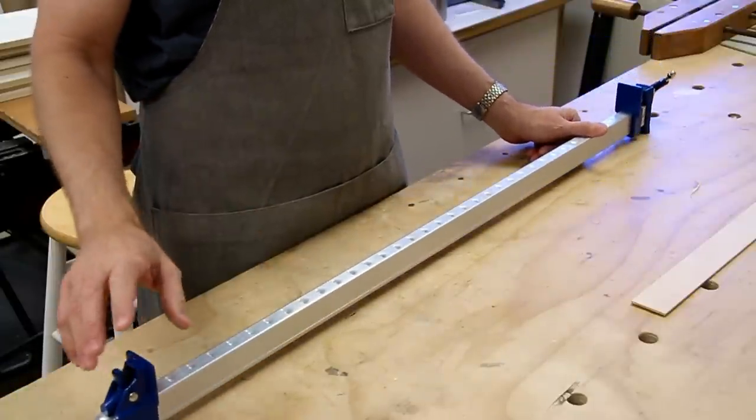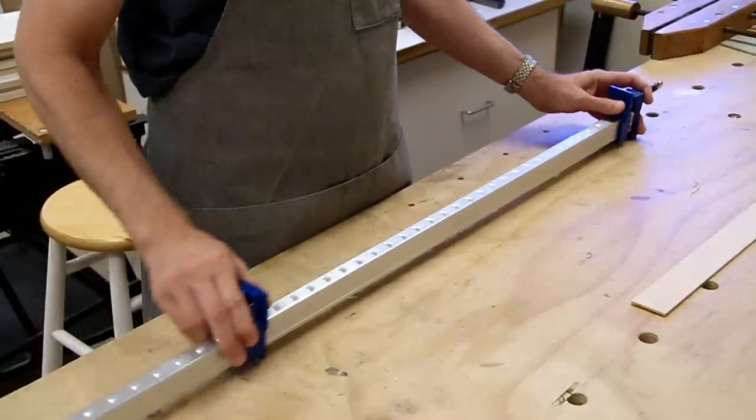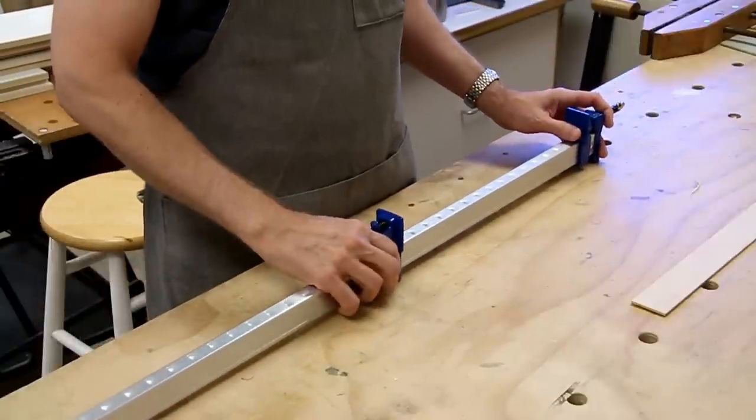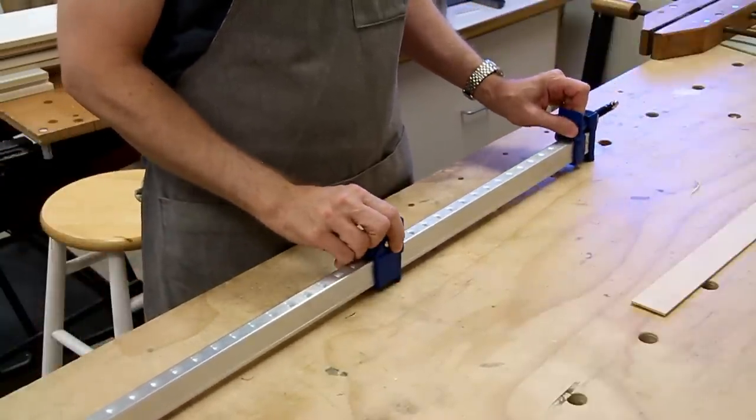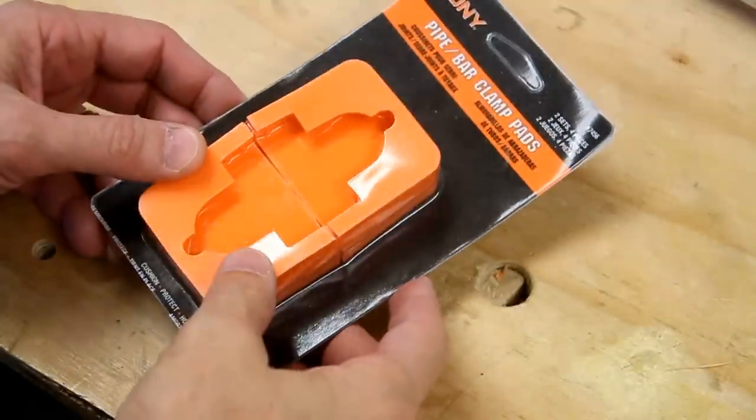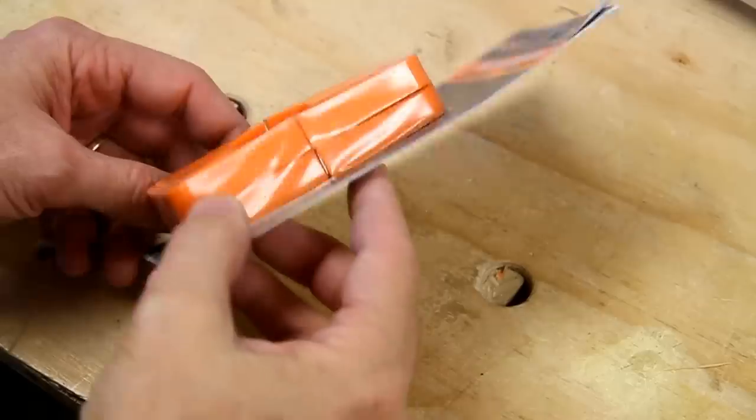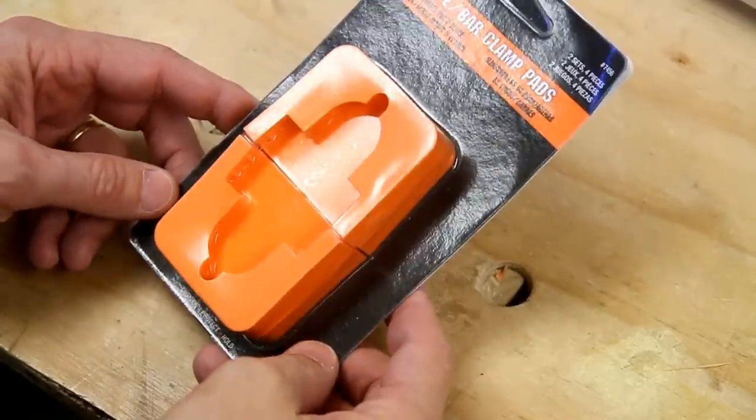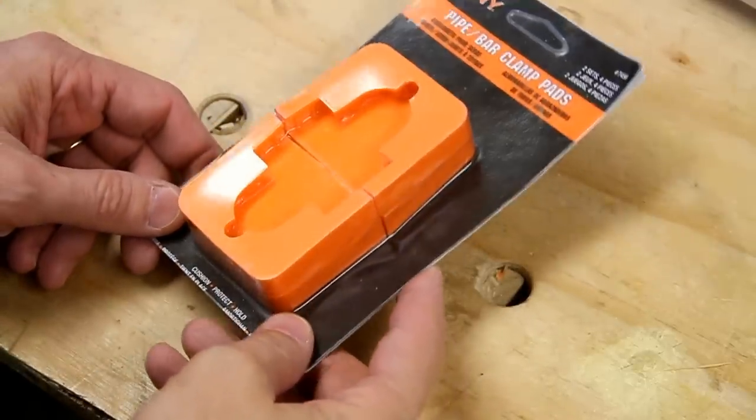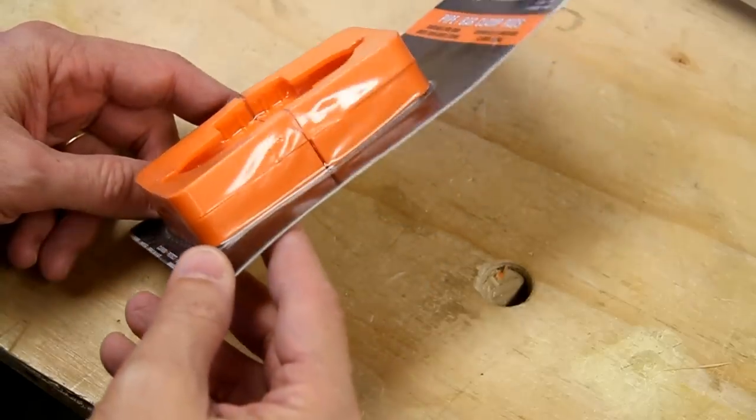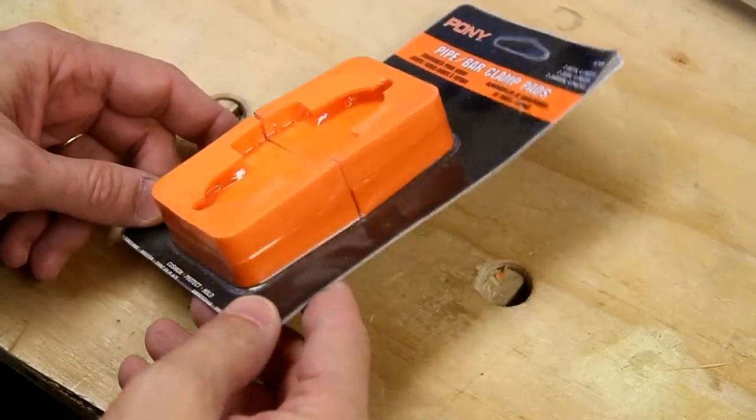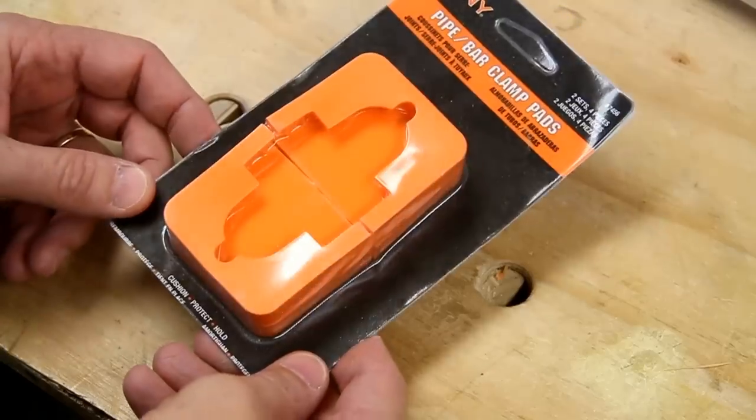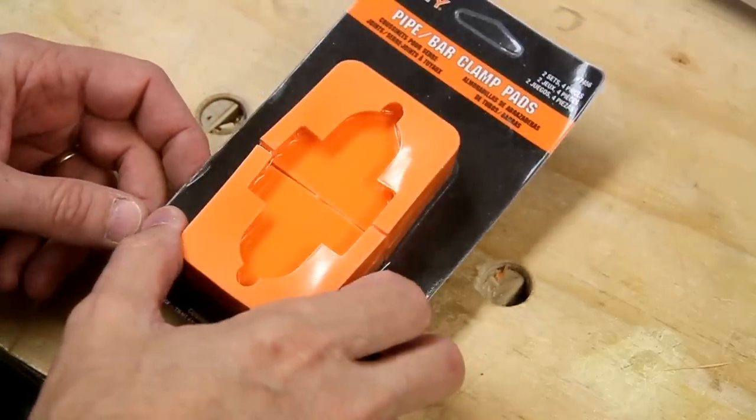The last thing to do is to add some pads to the clamp surfaces. It turns out that these pipe clamp pads from Pony fit the aluminum bar clamps perfectly. I bought these from Amazon for about $6, so that comes out to $3 per clamp. They're very economical. Let me show you how I attach them.